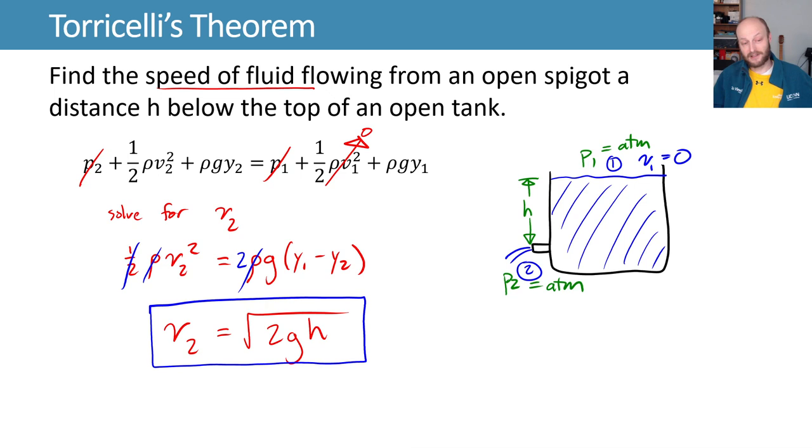And this turns out to work pretty well, that the speed of flow, the average linear speed of flow that you get coming out the bottom of that spigot, is equal to the square root of twice gravity times the height of the fluid above where that spigot is.